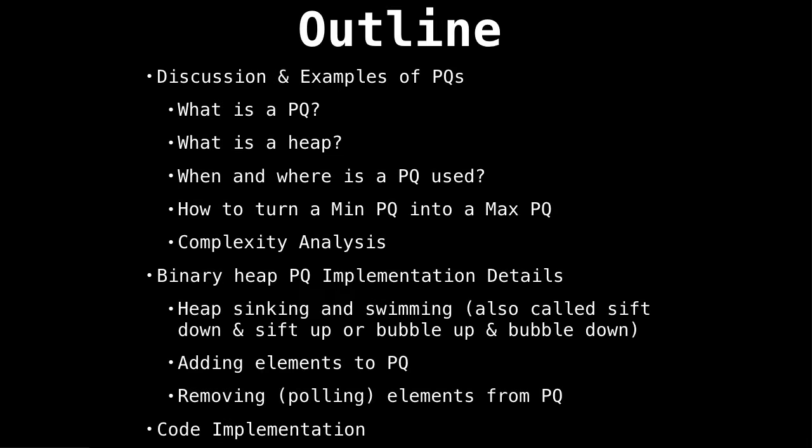So the outline for the priority queue series is, we're going to start with the basics, talking about what are priority queues and why they're useful. Then we'll move on to some common operations we do on priority queues and also discuss how we can turn min priority queues into max priority queues, followed by some complexity analysis. Then we'll talk about common ways we implement priority queues. Most people think heaps are the only way we can implement a priority queue, or that priority queues somehow are heaps. I want to dispel that confusion.